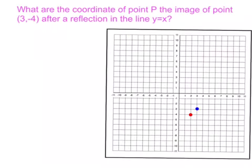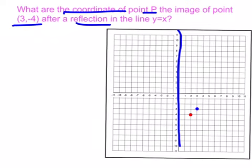Now I'm going to show you the coordinates of point P, the image of point (3,-4) after a reflection in the line y equals x.